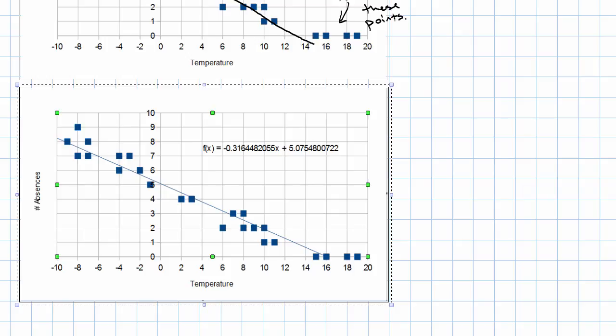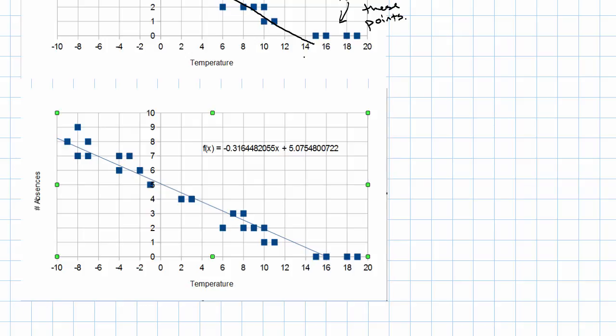Rounding the coefficients a little bit, the equation of this line is y equals negative 0.316x plus 5.075.